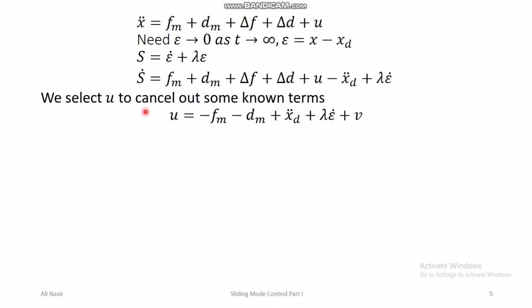We can define u to be equal to minus f_m, to cancel out f_m; minus d_m, to cancel out d_m; plus x_d_double_dot, to cancel the minus x_d_double_dot term; minus lambda times e_dot, to cancel that term; plus some function v. This v represents the remaining unknown part of u. The known terms are canceled by the first part of u, and we still need to determine v to handle the uncertainties.